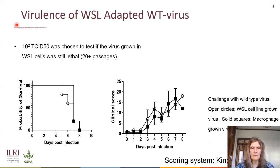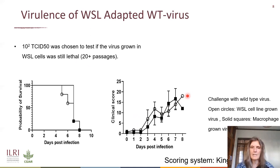We also checked the virulence of the WSL-adapted wild-type virus. We used 10² TCID50 to test the virus grown in macrophages versus the virus grown in WSL-type cells, which had been passaged 20 or more times. What we see is very similar clinical scores in animals, and they went down at the same time point. So there is no attenuation of the virus grown in WSL. We also did next-generation sequencing and FLI also did it, and we see indeed very few mutations — only a few single mutations that we are now checking with PCR to determine whether they are due to NGS errors.